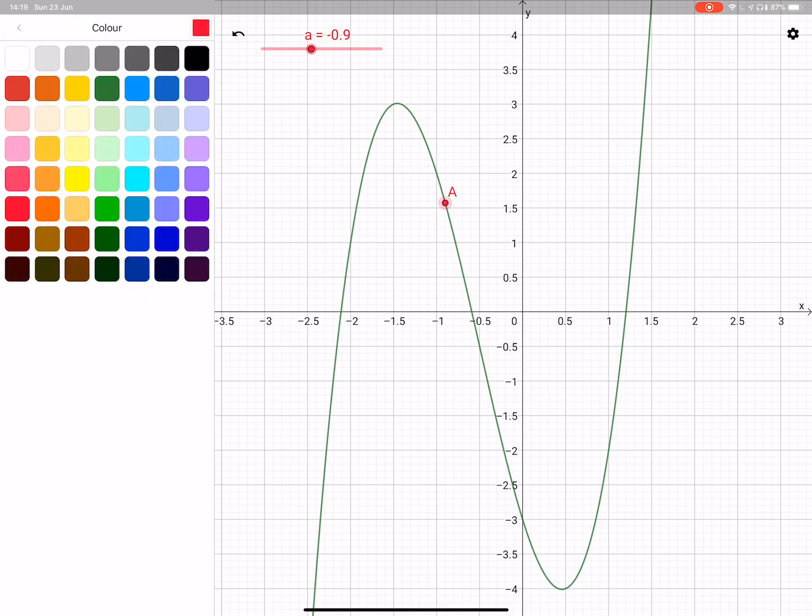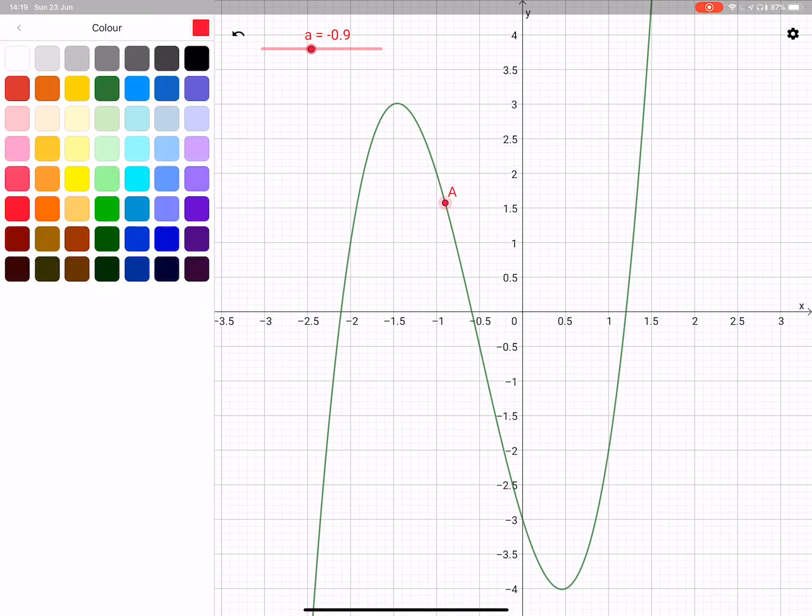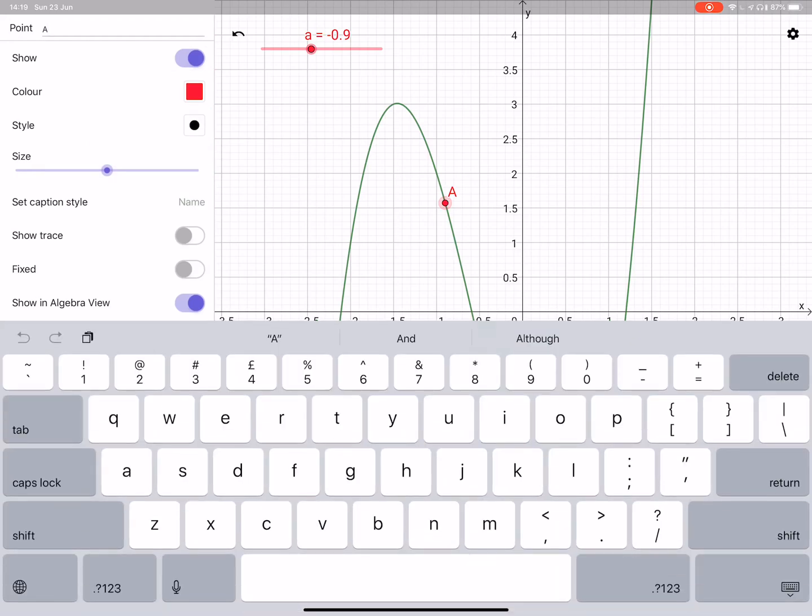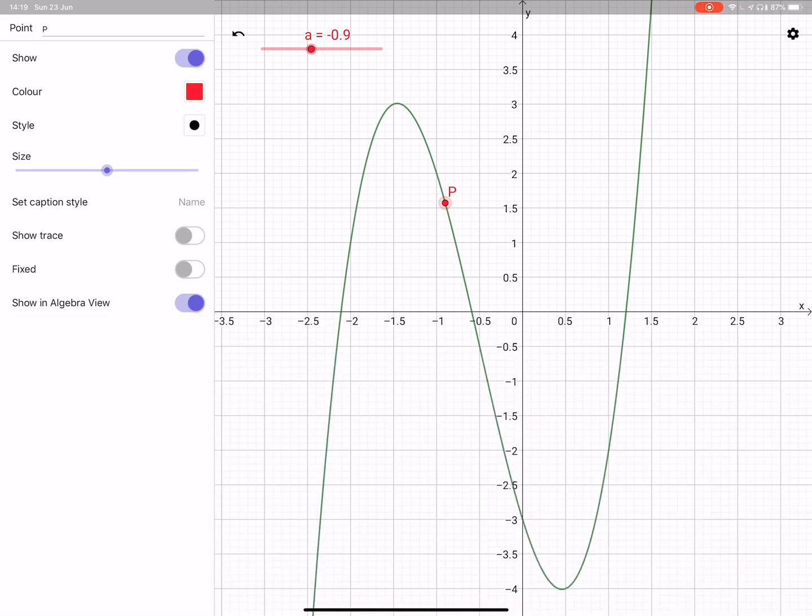Okay, so if we now select the point, the three dots, go to the settings, we'll change the color to red so it stands out. It's all personal taste. And I'm going to rename the point so it's at the top, it's going to rename it as a capital P. Okay, you can see it's all changed.